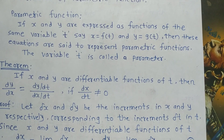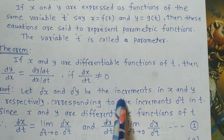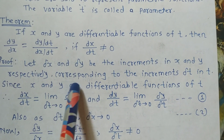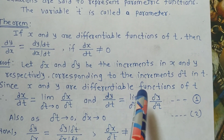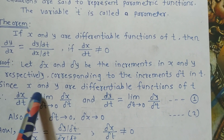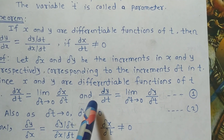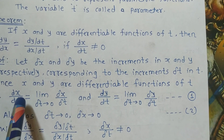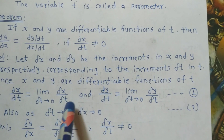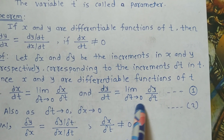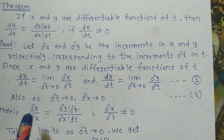First, let us take small increments of x, y, and t. Let delta x and delta y be the increments in x and y respectively, corresponding to the increment delta t in t. Since x and y are differentiable functions of t, by definition, dx upon dt equals limit as delta t tends to 0 of delta x upon delta t, and dy upon dt equals limit as delta t tends to 0 of delta y upon delta t. This is equation number 1.